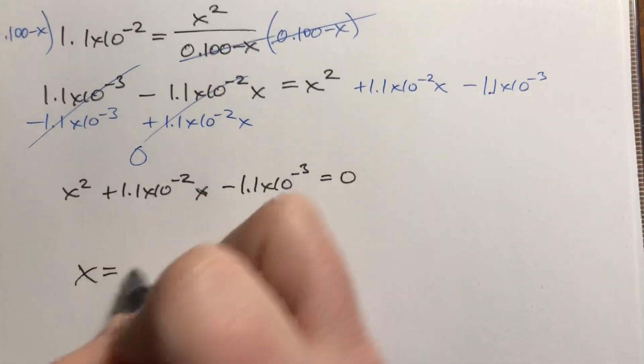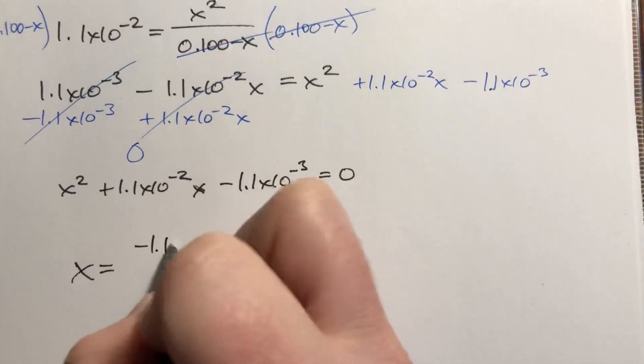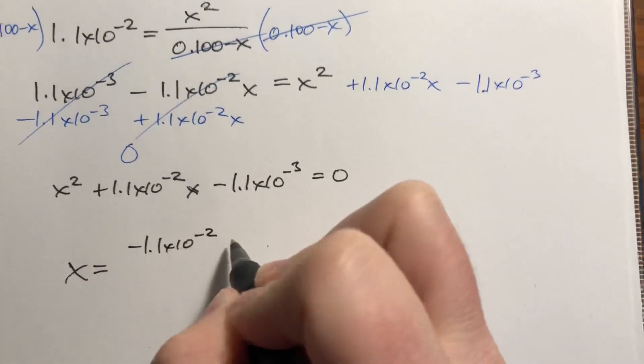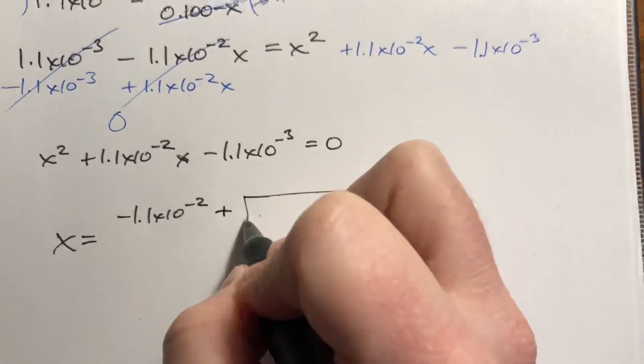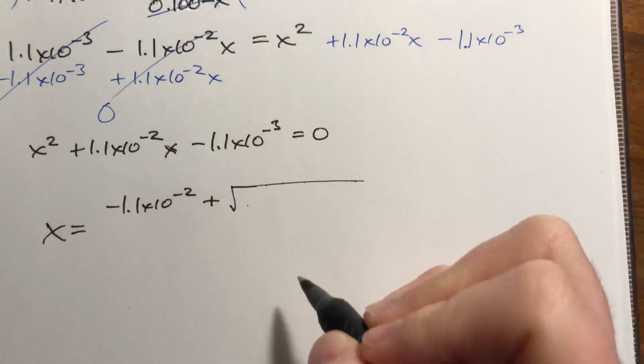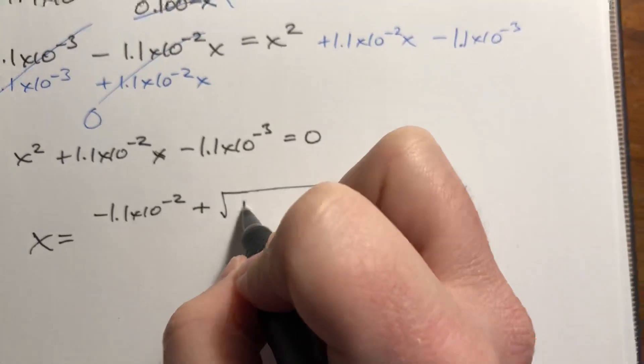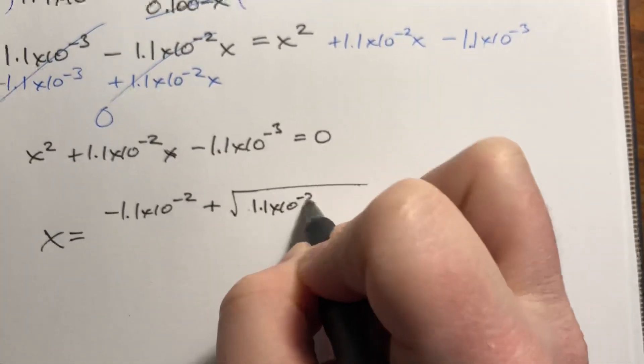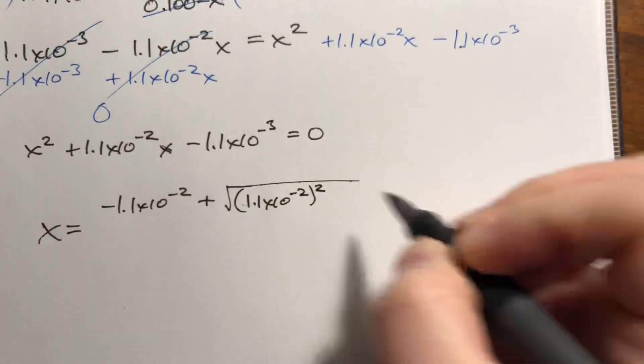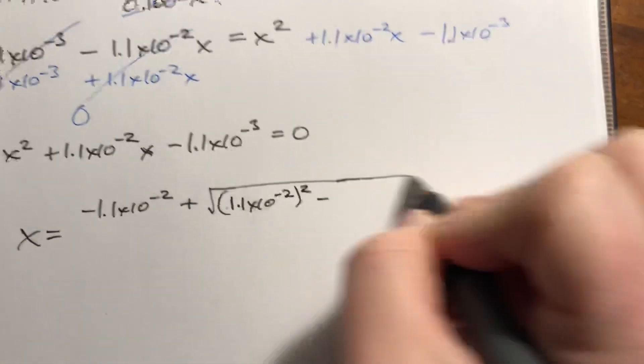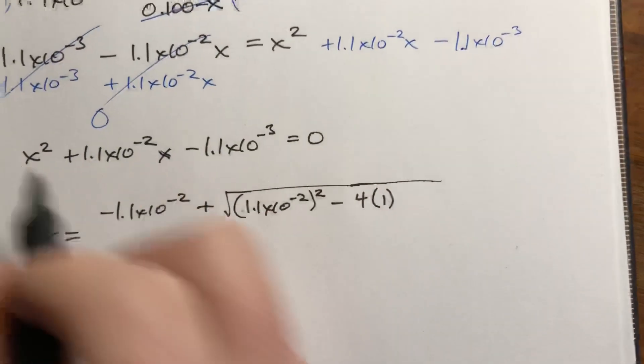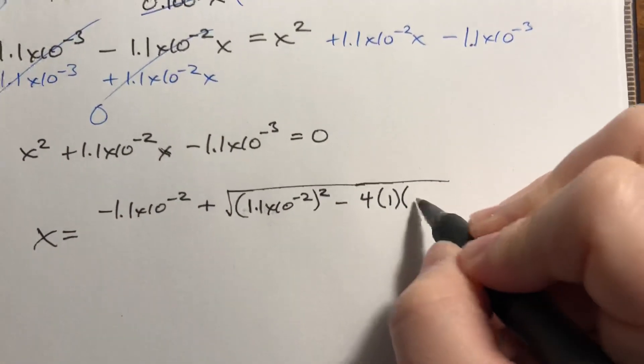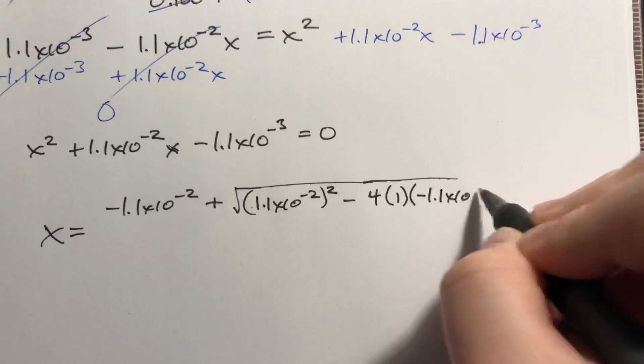So when we plug everything in, it's negative B, which is 1.1 times 10 to the negative second, plus or minus, but we only care about the positive answer, times the square root of B squared minus 4AC. B squared would be 1.1 times 10 to the negative second squared, minus 4AC. 4 is, you know, number 1 is our A value, and C is negative 1.1 times 10 to the negative third.